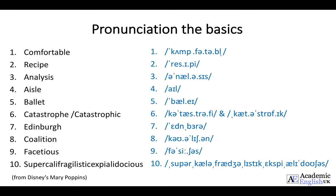So I'm going to say these words and you can check your pronunciation. The first word is 'comfortable'. Comfortable. The second word is 'recipe'. Recipe. The third word is 'analysis'. Analysis. The fourth word is 'aisle'. Aisle. The fifth word is 'ballet'. Ballet. The sixth word is 'catastrophe'. Catastrophe. And then the adjective is 'catastrophic'. Catastrophic.